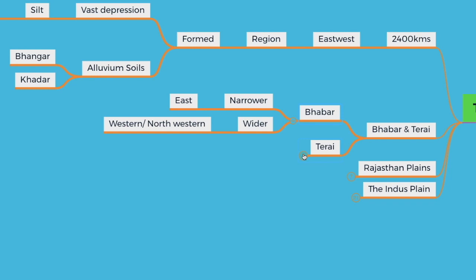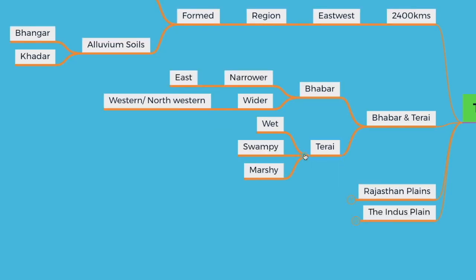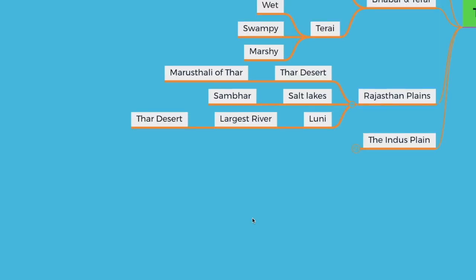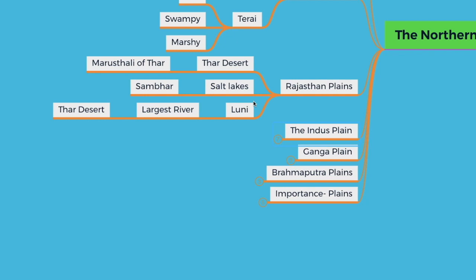Moving along to the western or Rajasthan plains, they are also known as the Thar Desert or Marustali. This region has many salt lakes; for example, Sambar. The Luni is the largest river in the Thar Desert. Let's look at the Indus Plain — it is drained by five rivers.